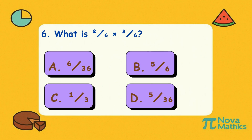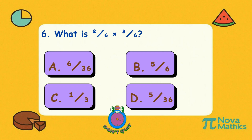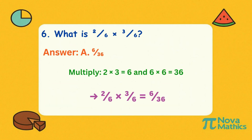Six. What is two-sixths times three-sixths? Two times three is six on top. Six times six is thirty-six on the bottom. So the answer is six-over-thirty-six.